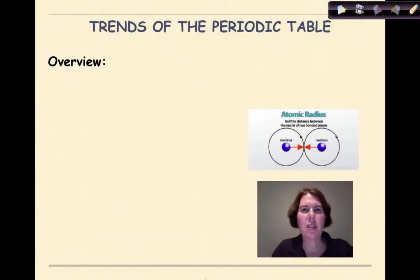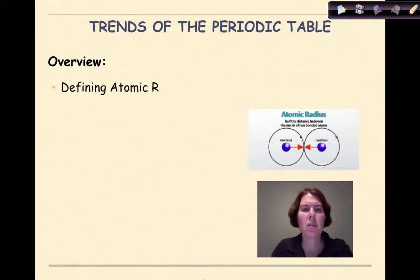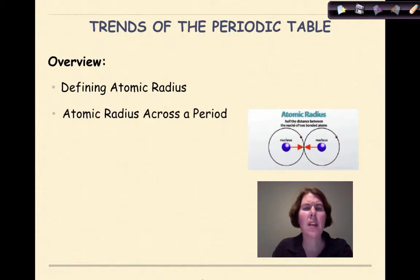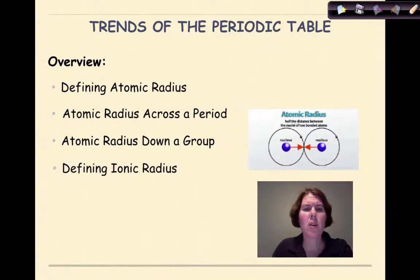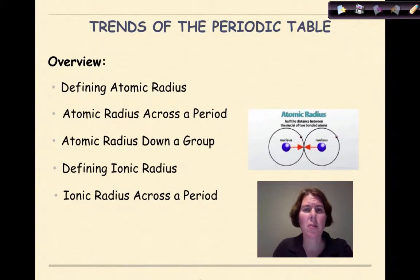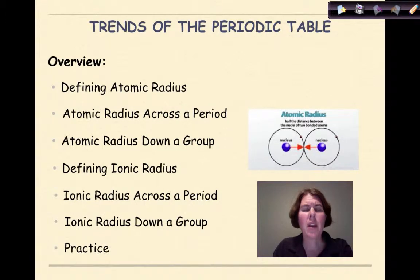Hi, my name is Dr. English, and today we're going to start talking about the trends of the periodic table. Specifically, we're going to look at the definition of atomic radius, the trend of atomic radius across the period, atomic radius down a group, the definition of an ionic radius, ionic radius trends across the period, ionic radius trends down a group, and finally a little bit of practice at the end.